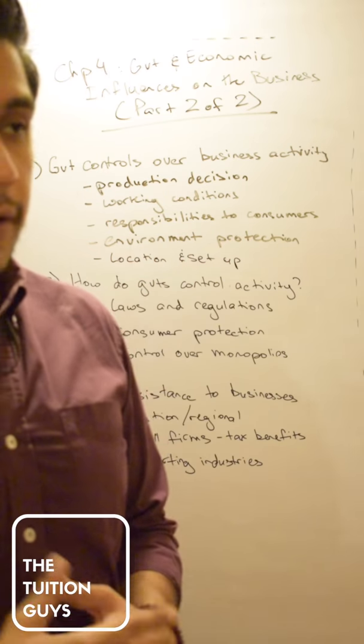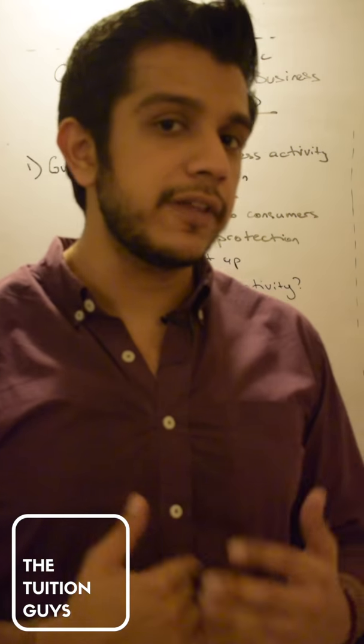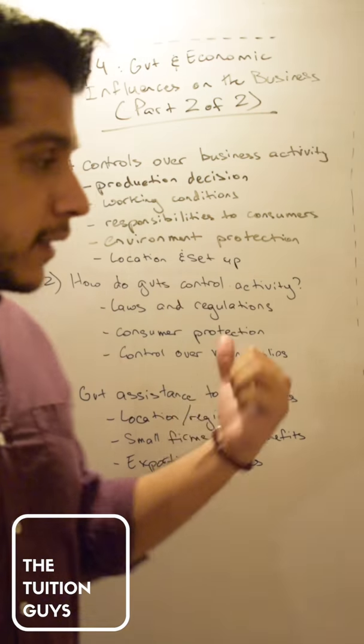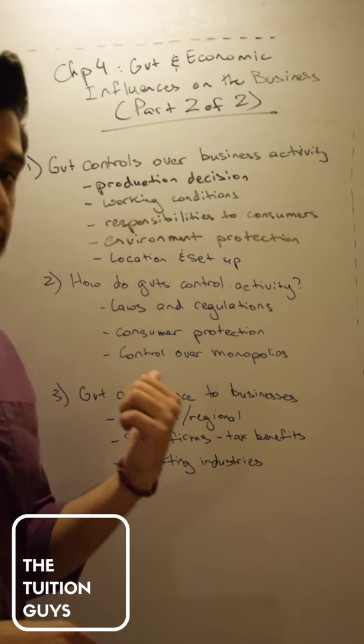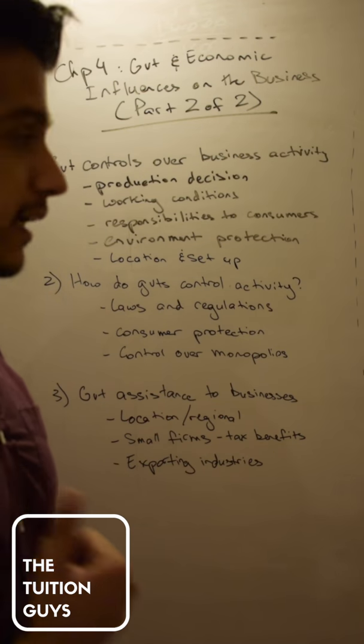And also we spoke about what some kinds of business activities might be and how they impact the society as a whole. Now we're going to talk about more along the lines of the government, how firstly the government controls business activities.